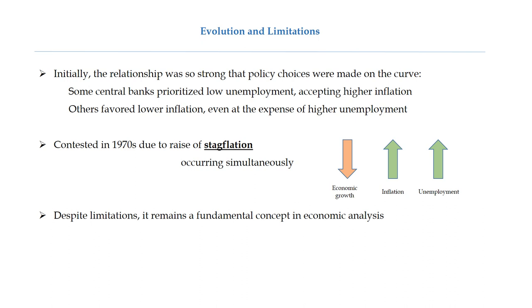Initially, the inverse relationship was so strong that policy choices were made based on the model, deciding between lower unemployment or lower inflation. However, the Philips Curve model was contested during the 70s, when simultaneous economic recession, increased inflation, and unemployment occurred. Consequently, policymakers had to resort to different measures to stabilize the economic situation. But despite its limitations, the Philips Curve remains a fundamental concept in economics.